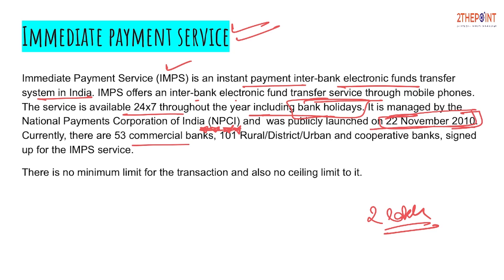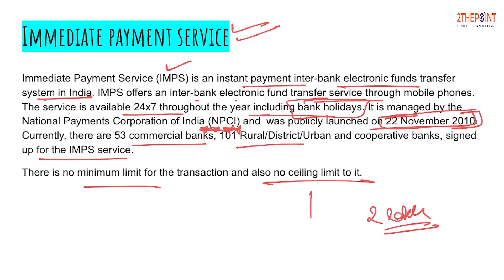Currently 53 commercial banks, 101 rural district and urban cooperative banks have enrolled for IMPS. There is no minimum limit for IMPS transactions, and you can transfer any amount — whether 1 crore or any amount of your property. In RTGS, the minimum transaction amount is 2 lakh rupaye.